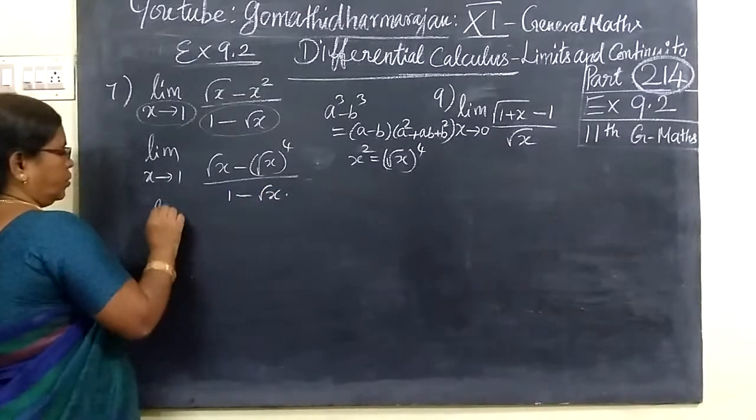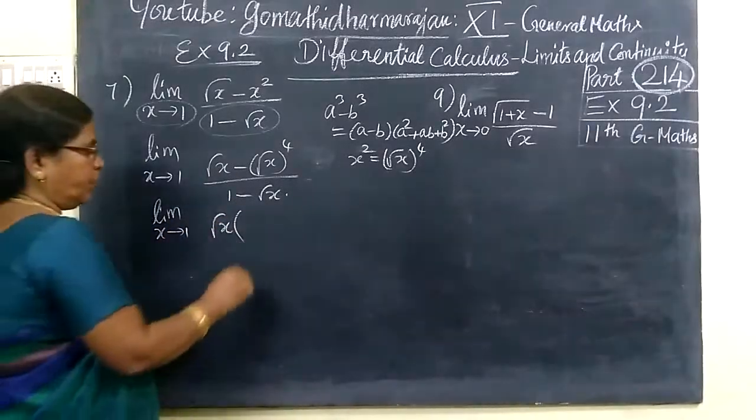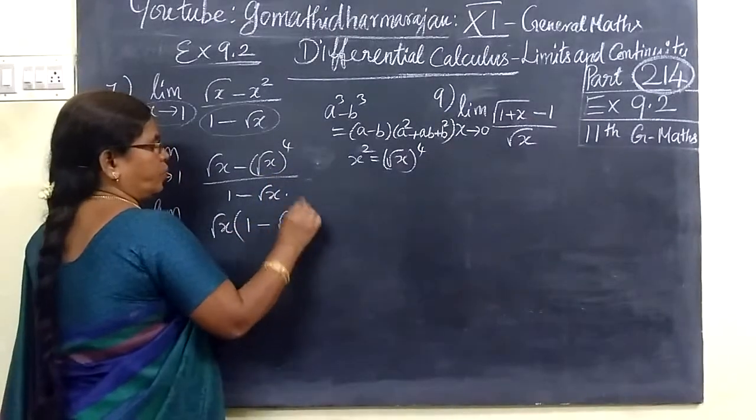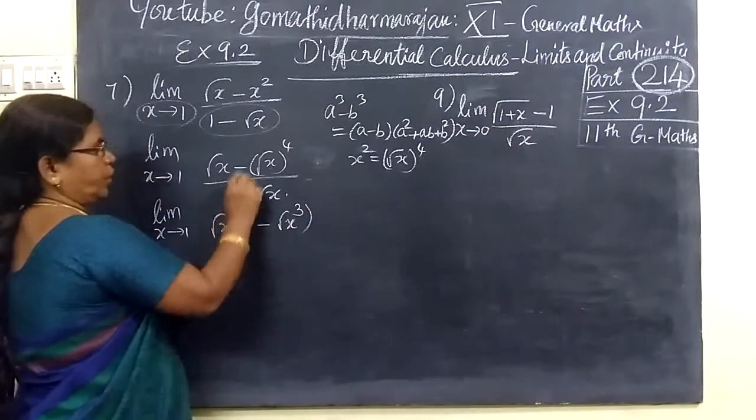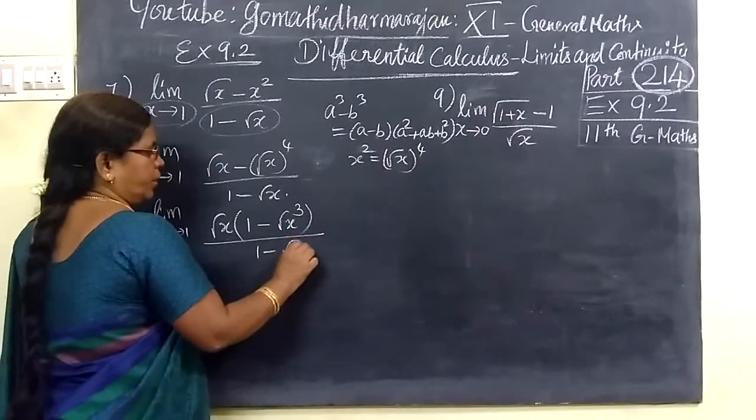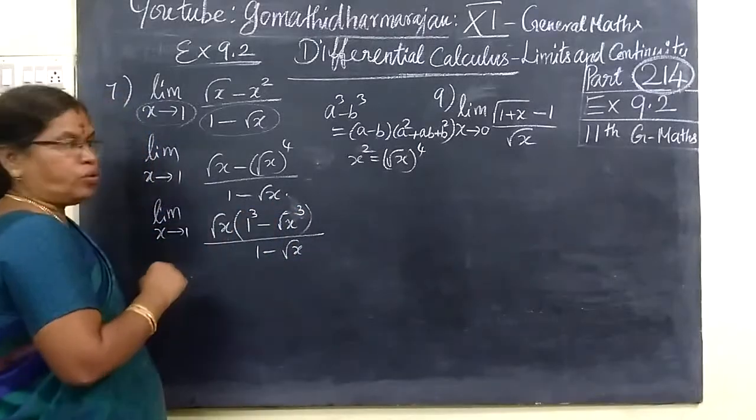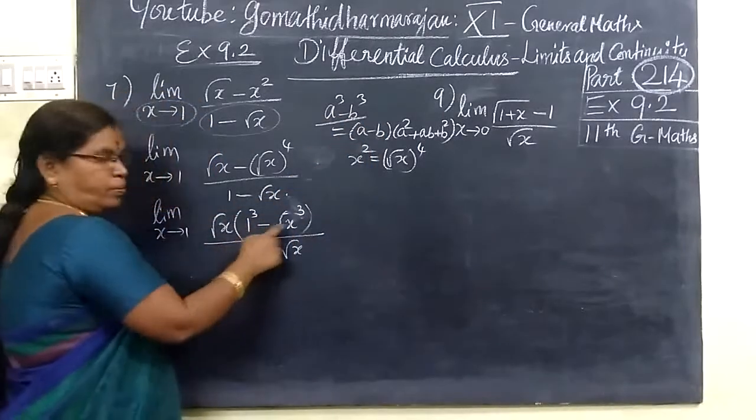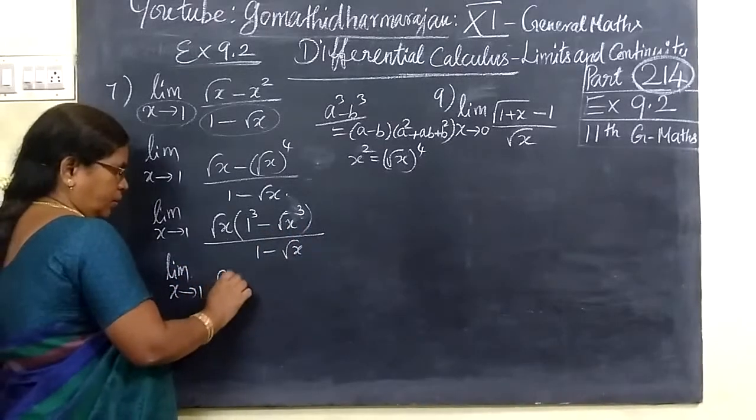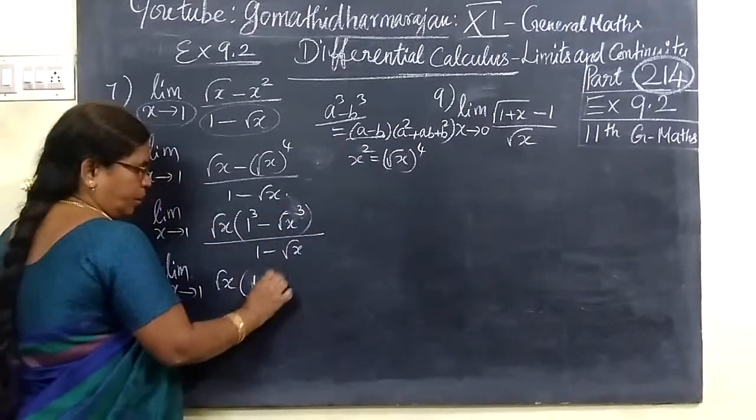Now you take root x cube minus one over one minus root x. You can write root x cube minus one by root x cube minus one. It's a cube minus b cube. So we can write root x minus one by root x square. A minus b.